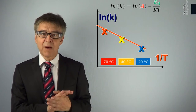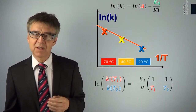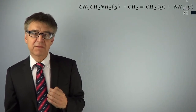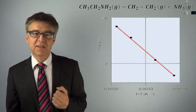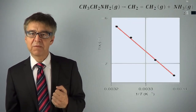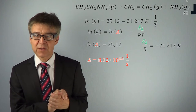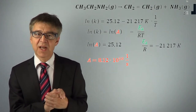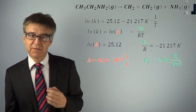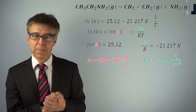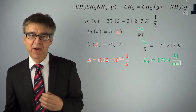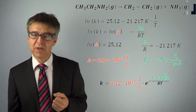Rate constants for arbitrary temperatures may be calculated using the Arrhenius equation. For example, the decomposition of ethylamine was studied at different temperatures and the rate constants were plotted according to Arrhenius. The Arrhenius plot yields an intercept of 25.12, from which we can determine the frequency factor to be about 8 times 10 to the 10th per second. The activation energy is obtained from the slope: 176.4 kJ per mole. With both of these coefficients, we can now calculate the rate constant for any temperature using the Arrhenius equation.